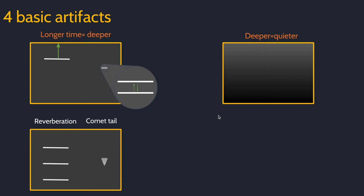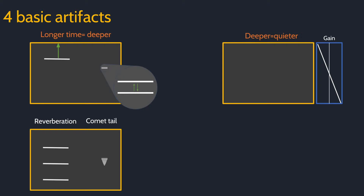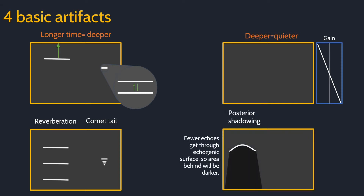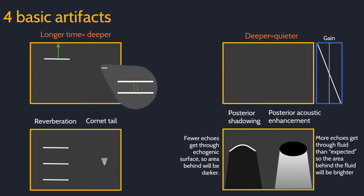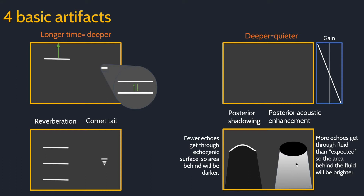The next assumption is that deeper is quieter. If there were no compensation for this, every image would have a gradient on top of it. With time gain compensation, however, the gain is increased with depth and the image is made more uniform. However, this can create artifacts as well. Posterior shadowing is the most intuitive: an echogenic structure will reflect most of the sound waves and fewer than the computer expects will get through. However, the reverse is true. Sound will pass through a cystic structure and more sound waves than the computer expects will get to the field deep to that cyst. This is called posterior acoustic enhancement — you can think of this as a reverse shadow.